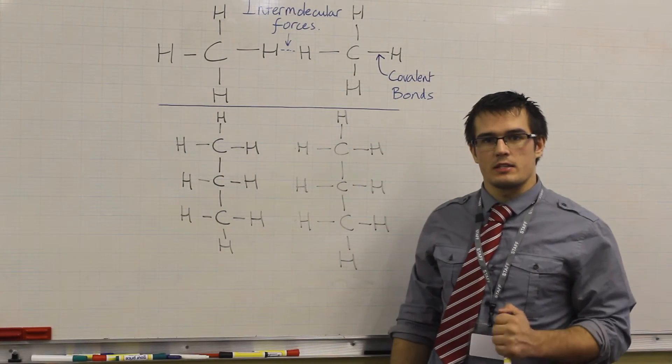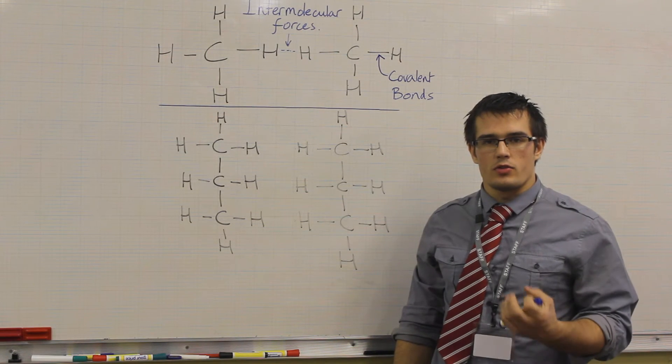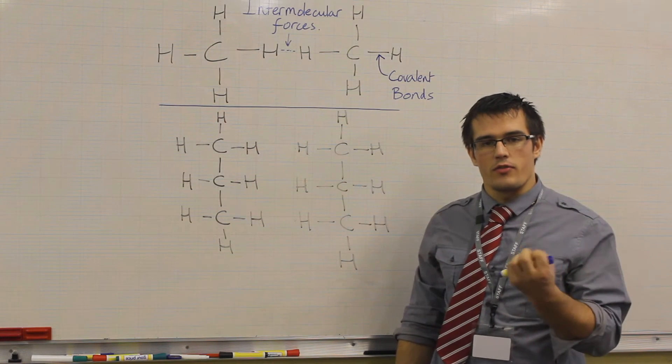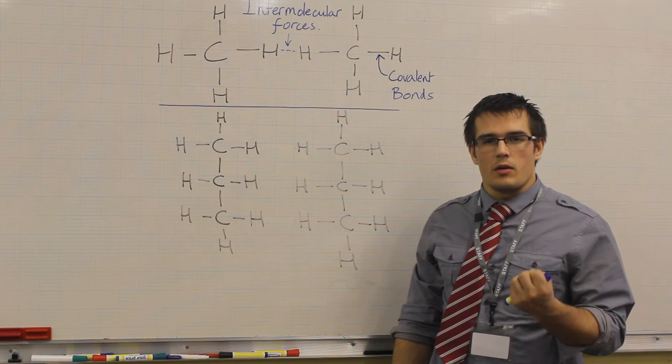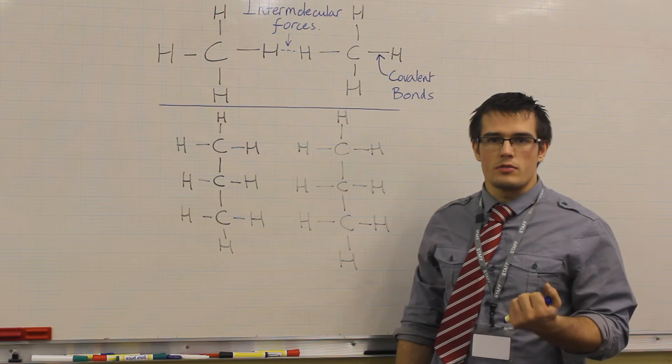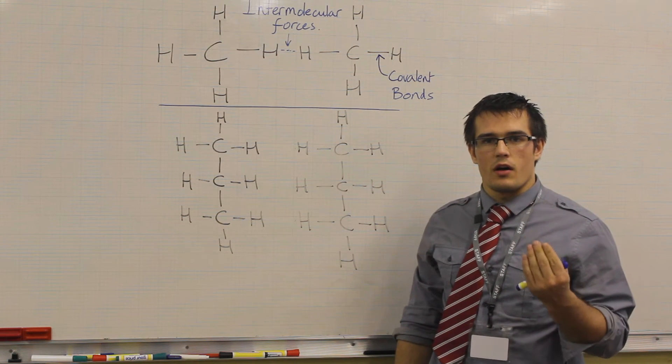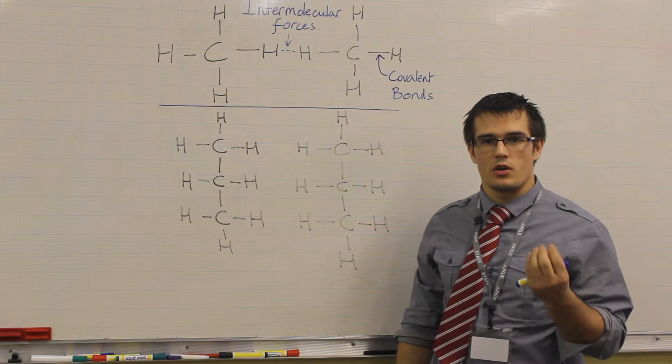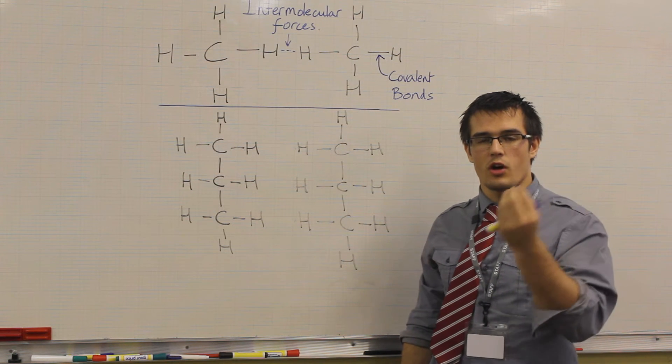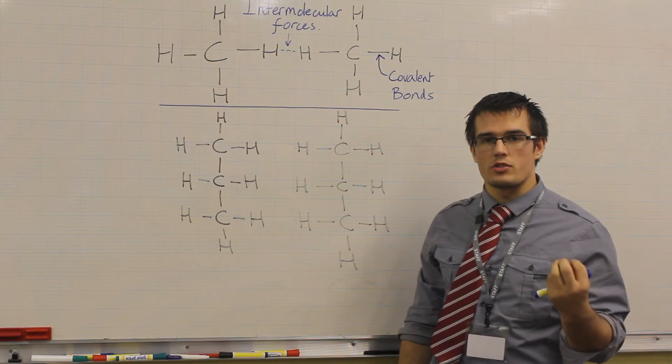We now need to be able to explain the experiment we've just carried out and understand the trends and patterns of the different fractions. Now, by looking at the fractional distillation column, you should see how the hydrocarbon molecules start as small chains coming out at the top of the column and larger chains at the bottom.